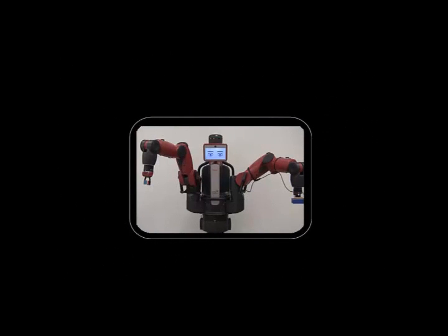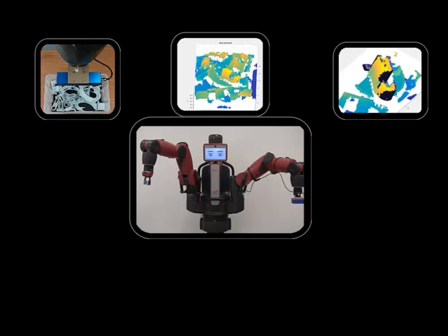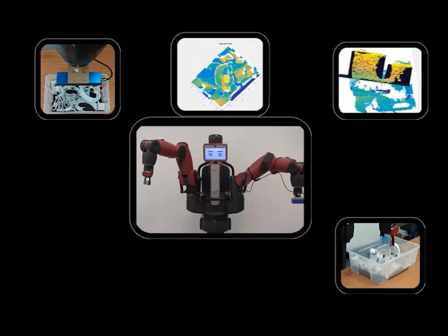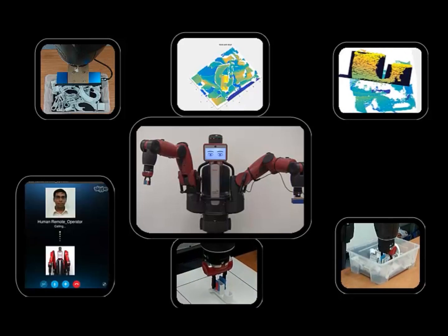RoboSAM embodies several important characteristics of smartness. It is able to use sensors to make sense of the world, and recognize parts and their locations and orientations in 3D. It is able to plan its own moves to complete the given task. It is also smart enough to call humans for help when needed.